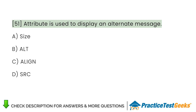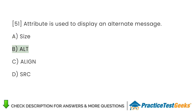Which attribute is used to display an alternate message for an image? A. Size. B. Alt. C. Align. D. SRC.